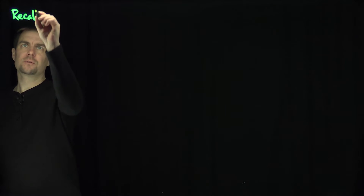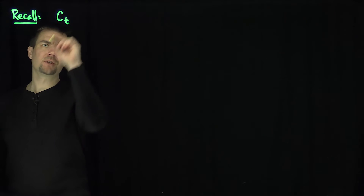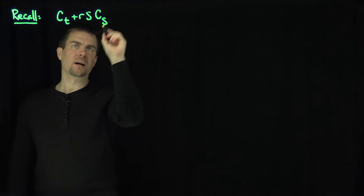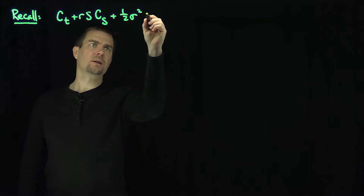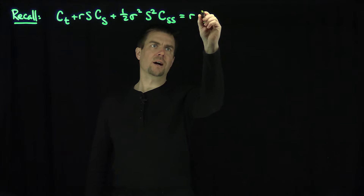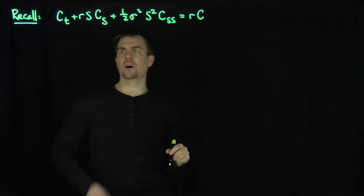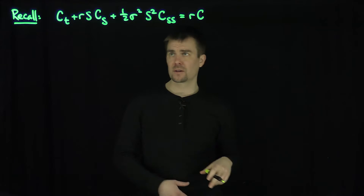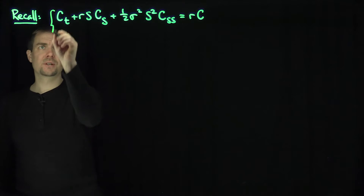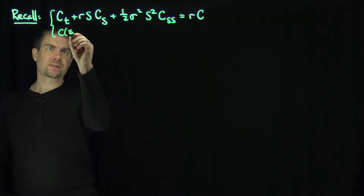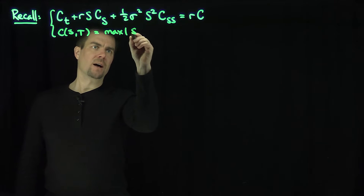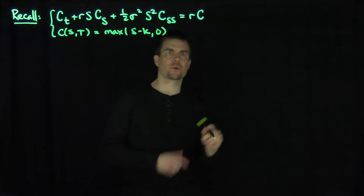Recall that Black-Scholes is: partial c partial t plus r·s·(partial c partial s) plus one-half sigma squared s squared c_ss, the second partial with respect to s, is equal to r times c. Here s is the stock price, r is the risk rate of return, sigma squared is the volatility or implied volatility of the underlying asset, and c is the call premium. This is coupled with the condition that c of s at expiration time capital T is equal to the maximum of s minus k and zero. So that's the Black-Scholes equation.